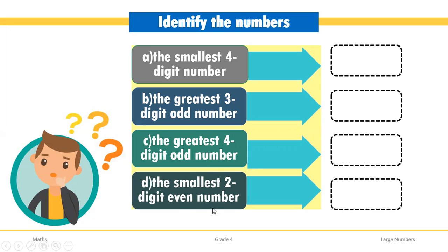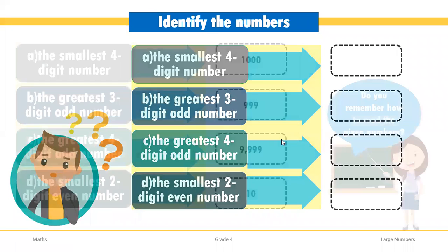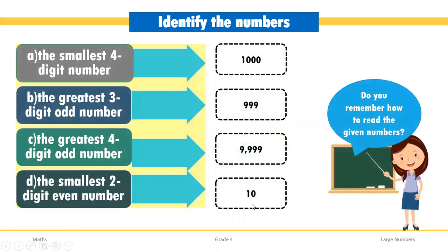Next is the smallest two-digit even number. When writing the smallest two-digit number, the starting digit is 1 and the next digit will be 0, giving us 10. Now, do you remember how to read the given numbers? 1000 is read as one thousand. Then 999 — the last two digits are read combined. For 9999, it is a four-digit number: once, tens, hundreds, thousands — so it is 9999. The two-digit number you can easily read: it is 10.